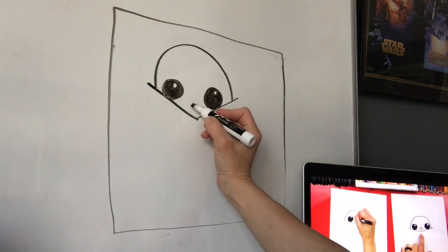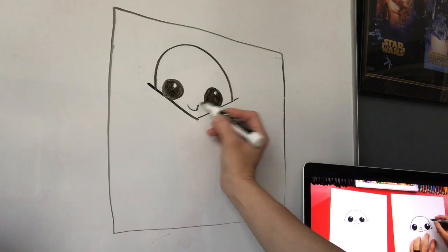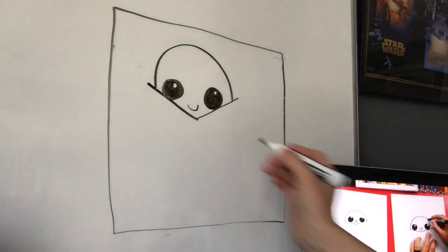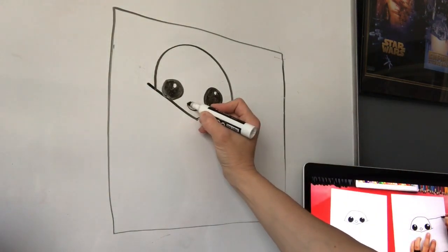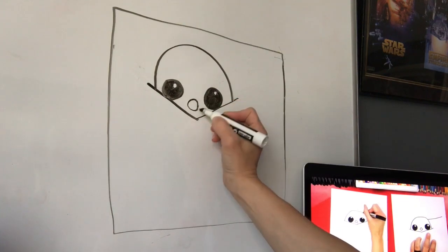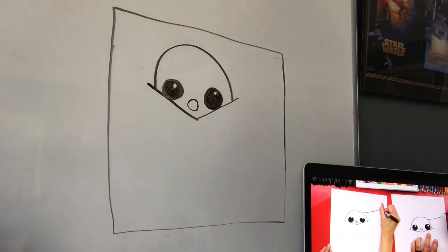Now we're gonna make his nose shape. So a little U shape. Looks like a smile. And then we're gonna do another little rainbow shape at the top. That's gonna make his little nose.